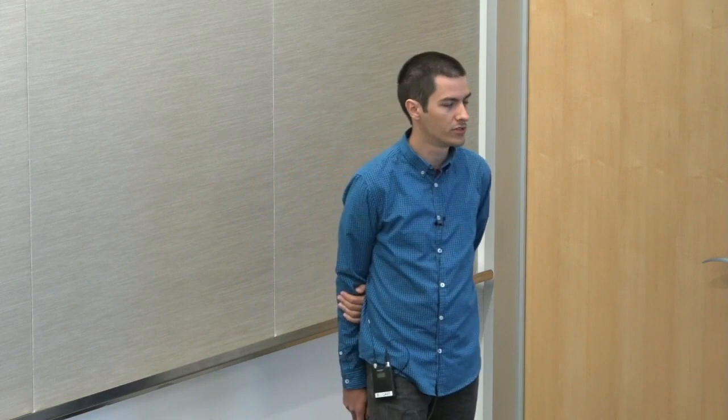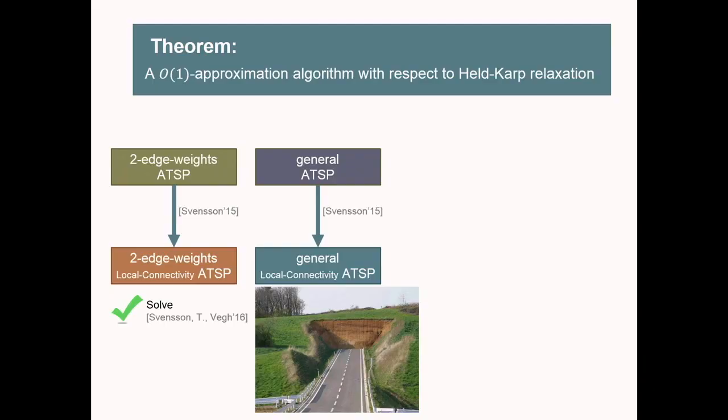In 2016, we could solve local-connectivity ATSP for graphs with two different edge weights, getting a constant factor for that class. But we couldn't generalize to graphs with three edge weights. So instead, we take a different approach — staying in the realm of ATSP throughout, proceeding via a series of reductions to more and more structured instances, and now we can give a constant factor approximation for general ATSP with respect to the Held-Karp relaxation.